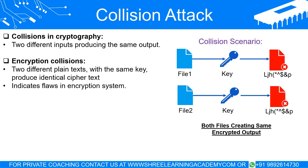Collisions in encryption. Encryption is the process of converting plain text into an unreadable form, also known as cipher text, using a specific algorithm and an encryption key. Ideally, the same plain text encrypted with the same key should always result in unique cipher text, making it extremely difficult for an unauthorized person to decipher it. However, when two different plain texts, when encrypted with the same key, generate the same cipher text, we encounter a collision.